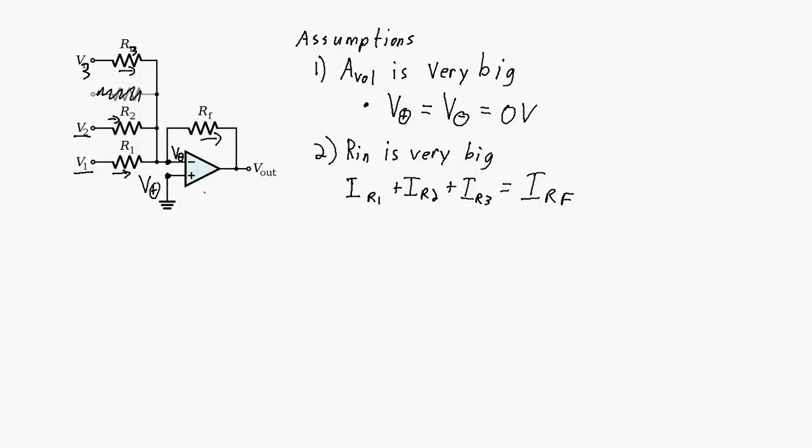Now, if we take the fact that the voltage at the inverting terminal is at ground, zero volts, the voltage across R1 is simply going to be V1 minus zero, or in other words, V1. So if we've got V1 across this resistor R1, we can rewrite the current in that form according to Ohm's law.